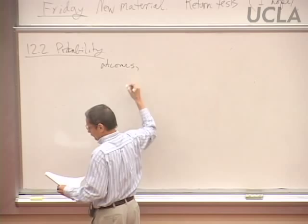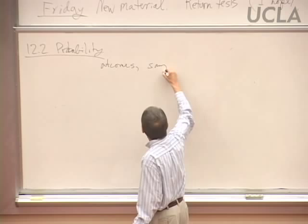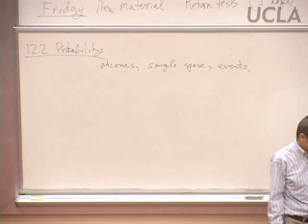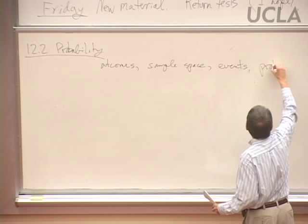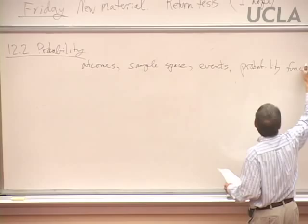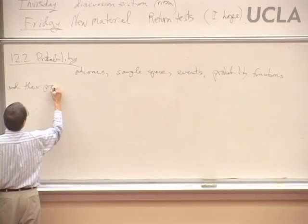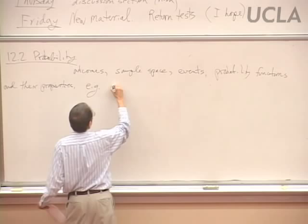But it's not a course on counting, it's a course on probability. So we talked about outcomes from running some experiment — the sample space and events. An event is just some set of outcomes, so it's a subset of the sample space. And probability functions and their properties.